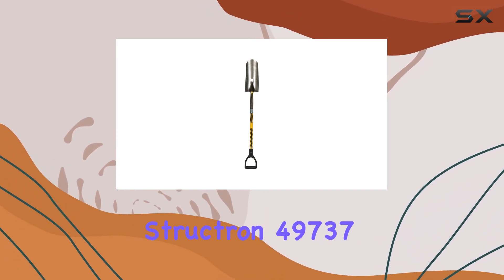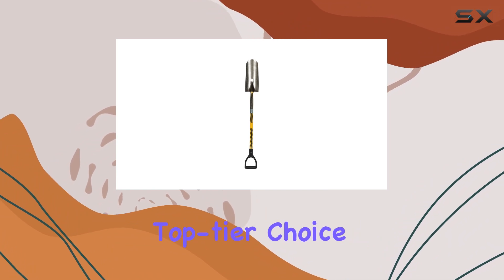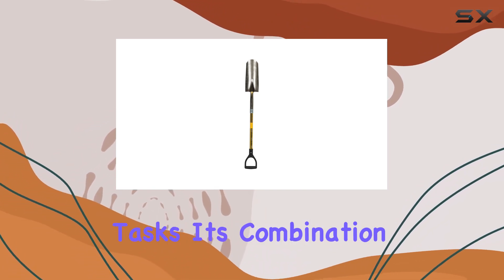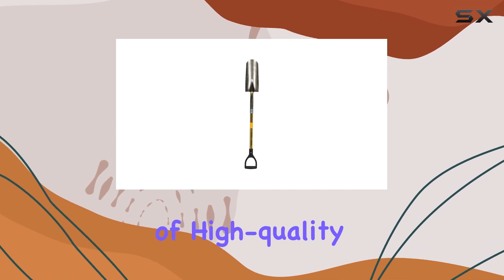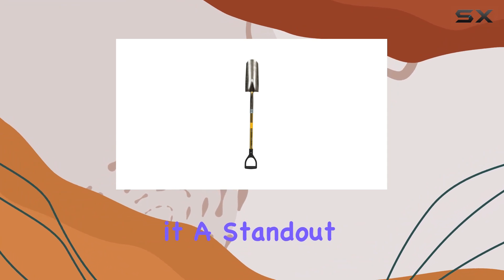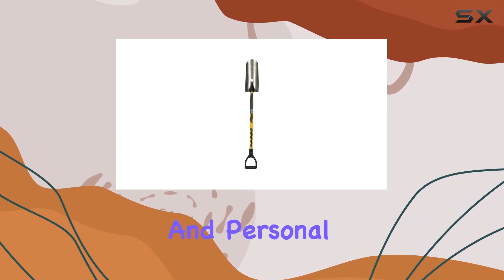Overall, the Structron 49737 Drain Spade Shovel is a top-tier choice for anyone in need of a reliable and robust tool for demanding tasks. Its combination of high-quality materials, ergonomic design, and practical features make it a standout option for both professional and personal use.